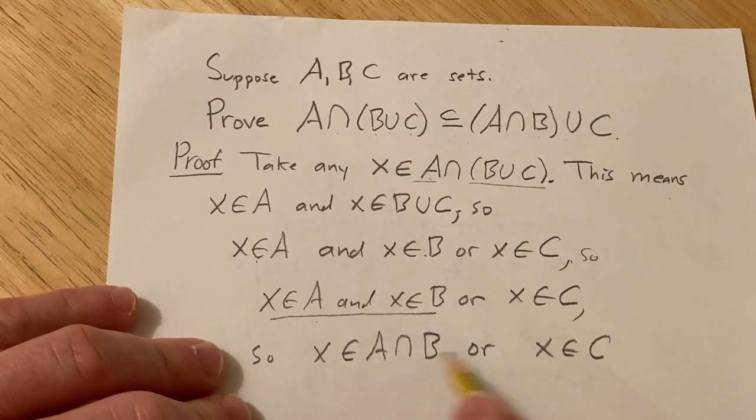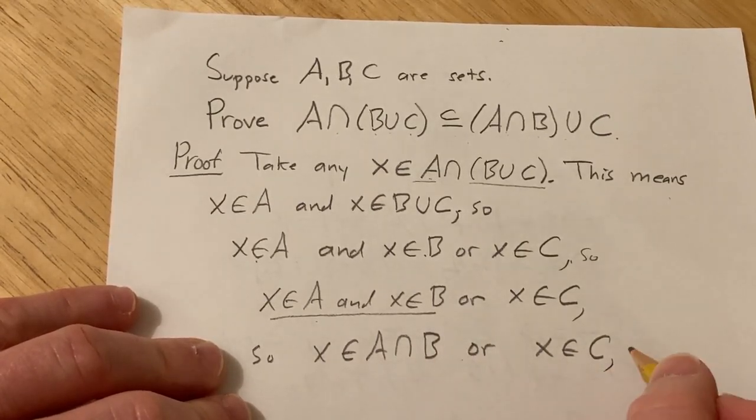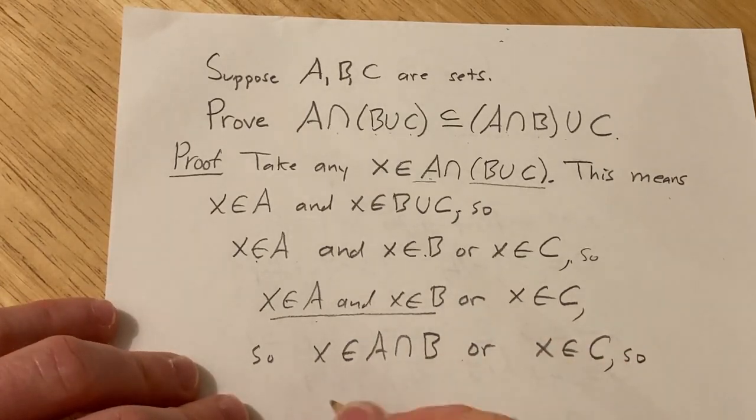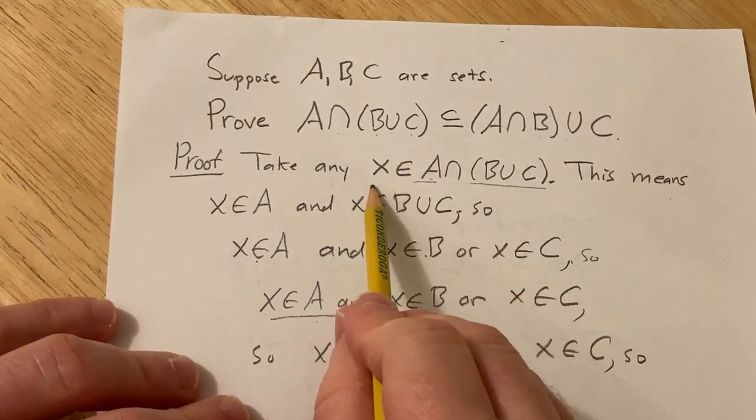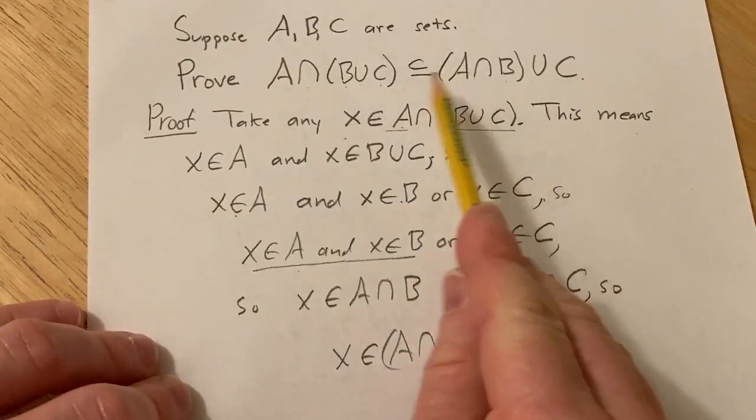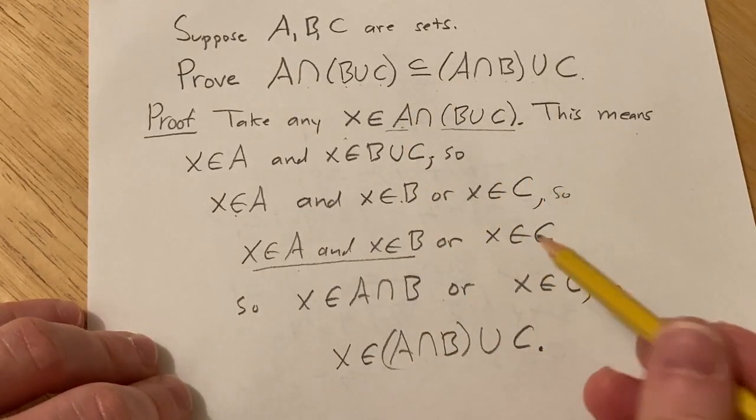But this means that x is in the union of these two sets because there's an or. So this means that x is in A intersected with B union with C. So we took any x in this set here and then we showed it belongs to this set.